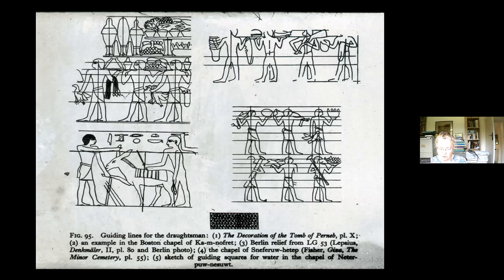If you're looking at the non-elite — the people who served the tomb owner — sometimes these rules are relaxed. Here on the left-hand side, figures with a donkey show a man beating the donkey on the back with his arm across the shoulder, going away from the rules, because normally you would have to show the whole torso with the shoulders intact.